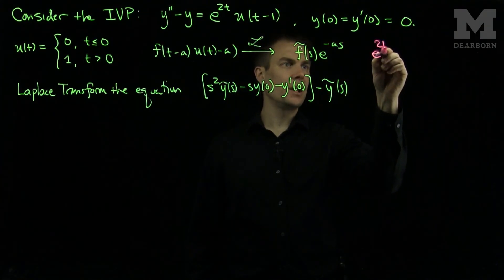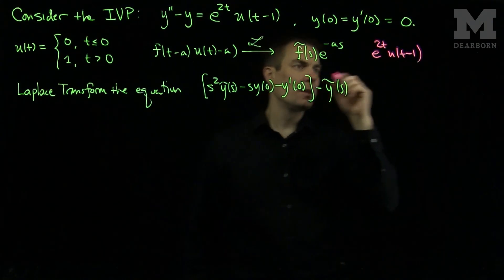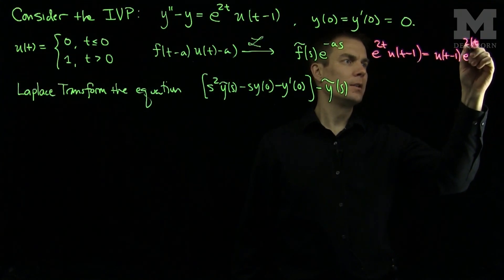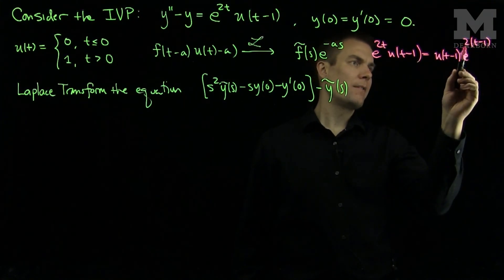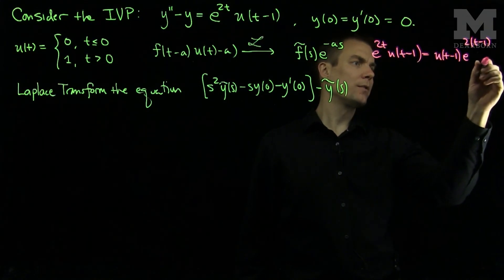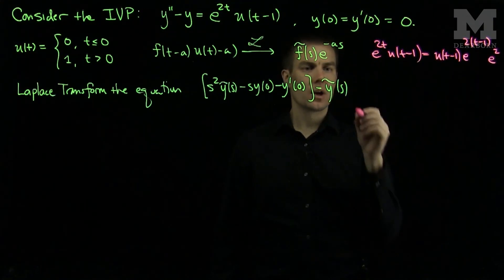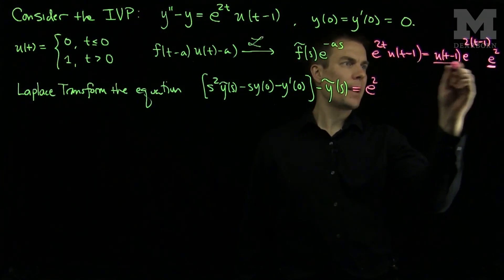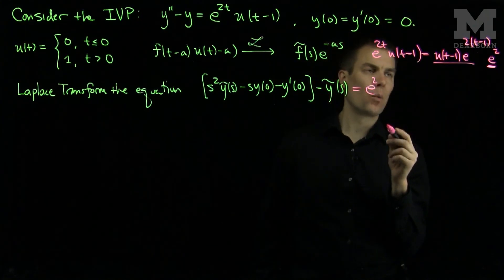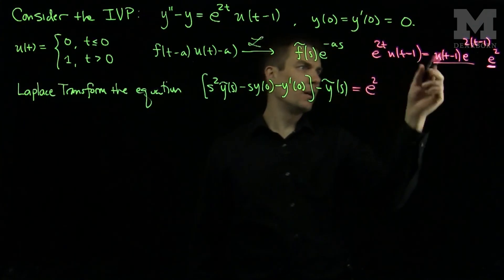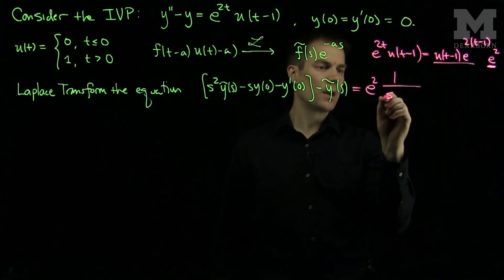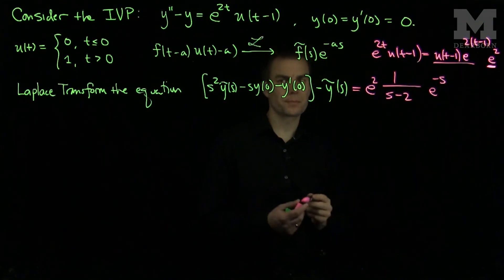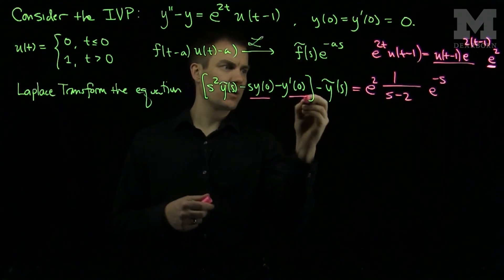e to the 2t times u of t minus 1 can be rewritten as u of t minus 1 times e to the 2 times (t minus 1). But since we've added a factor of e to the negative 2, we compensate with a constant factor of e squared. So the Laplace transform of e to the 2t is 1 over s minus 2, and then we multiply by e to the negative s for the shift of 1.